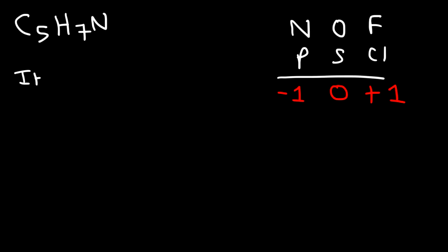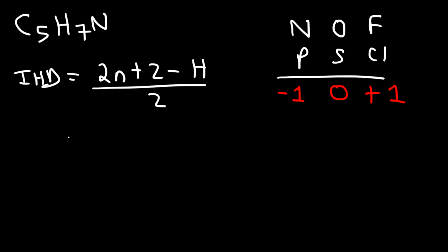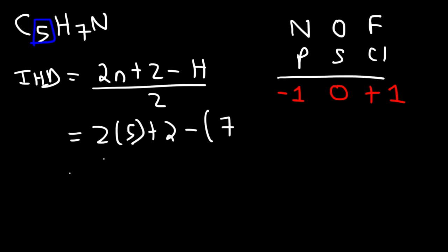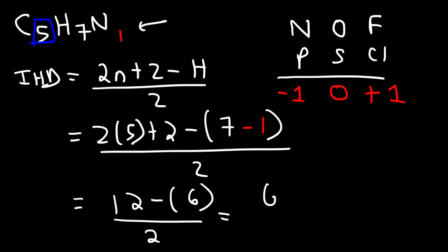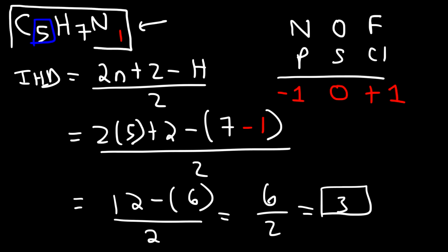Using the formula (2n + 2 − H) / 2 with n = 5 carbons, 7 hydrogens, and 1 nitrogen: subtract 1 from hydrogen for the nitrogen, giving 6 effective hydrogens. So: (2×5 + 2 − 6) / 2 = (10 + 2 − 6) / 2 = 6/2 = 3. The index of hydrogen deficiency for this molecule is 3.